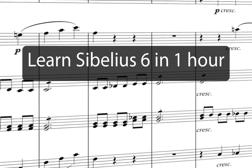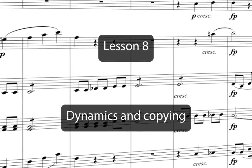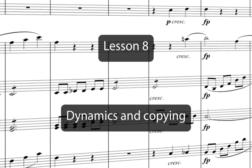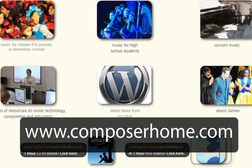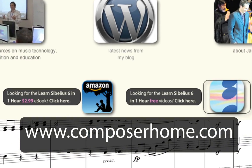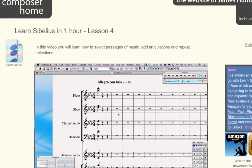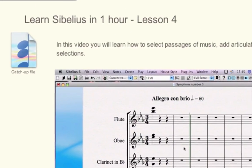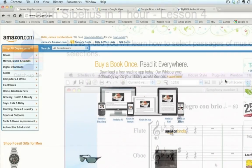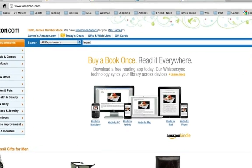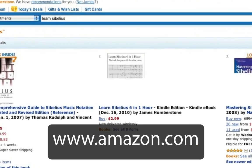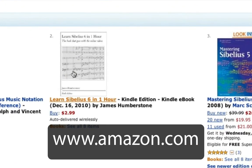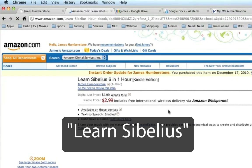Welcome to Learn Sibelius 6 in one hour. You can download a PDF of the Eroica score that we'll copy in this course from my website www.composerhome.com. If you want, you can also download catch-up files which allow you to jump straight into any individual lesson. And now there's an ebook for you to download to your PC, Mac, or mobile device from www.amazon.com. Just search for Learn Sibelius.